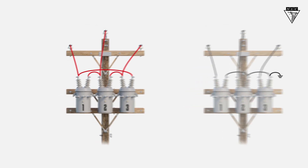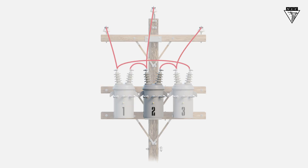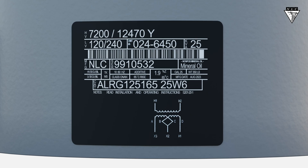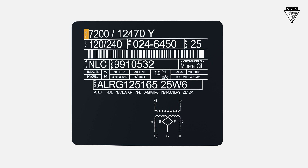Before we begin, remember that the primary coil voltage rating can be found on the nameplate of the transformer, labeled HV for high voltage. If there are two numbers, the primary voltage will always be the smaller number, so on this nameplate it's 7200 volts.